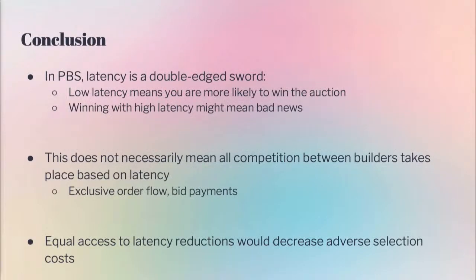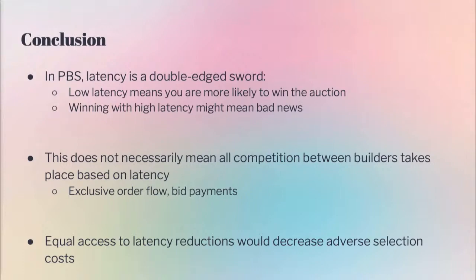In conclusion, the PBS model shows that latency is a sort of double-edged sword. Lower latency means you are more likely to win the auction, but if you have higher latency and you win the auction, this is probably bad news for you — you'll need to take this into account in your bidding strategy. This doesn't necessarily mean all competition will be on latency. This model doesn't account for exclusive order flow or bid payments. If you invest heavily in latency optimizations but still need to bid in the PBS auction and your optimizations weren't worth it, you could be running at a loss. The most important part is that there will be some form of equal access to latency reductions to decrease adverse selection costs in any PBS auction mechanism.